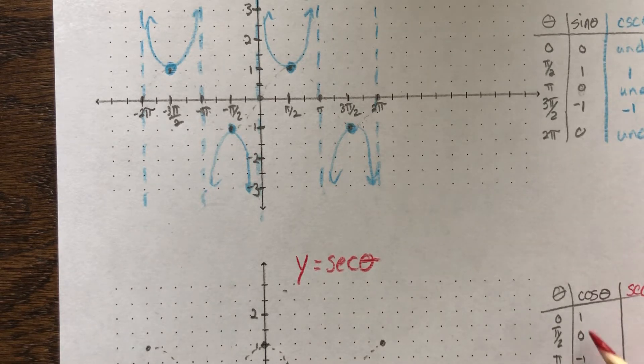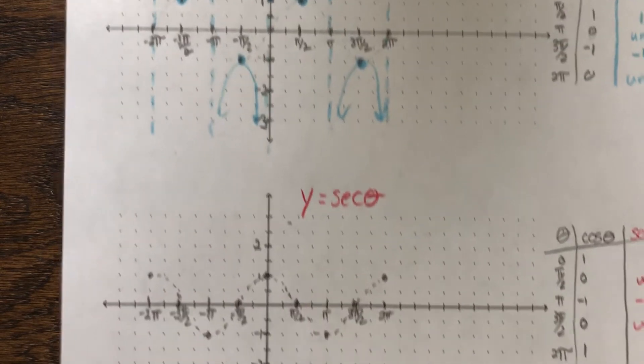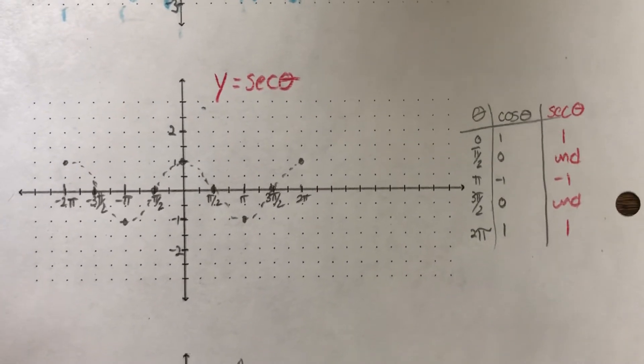The reciprocal of 1 is 1. The reciprocal of 0 is undefined. Negative 1 is negative 1. 0 is undefined, and 1 is 1. Oops, got to focus there. Sorry.